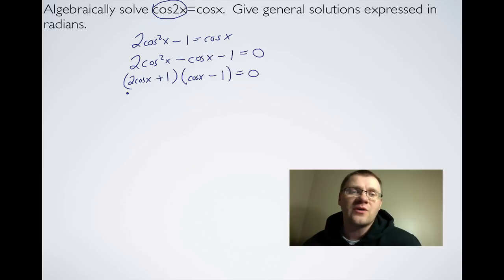So we get when we solve both of these factors, we get this first one being cosx = -1/2 by moving the 1 over to the other side and then dividing by 2. And then we get cosx = 1.